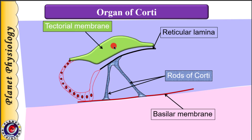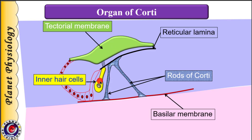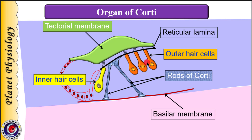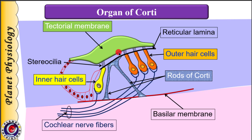Rods of Corti are placed on the basilar membrane and support the reticular lamina. Over the reticular lamina is a viscous gelatinous mass called the tectorial membrane. On the medial aspect of the rods of Corti is a single row of inner hair cells, supported by phalangeal cells. Lateral to the rods of Corti are 3 to 4 rows of outer hair cells, supported by Deiters cells, also called outer phalangeal cells. Upper ends — the necks of all hair cells — are tightly fixed into the reticular lamina. Apical ends of the hair cells project numerous minute hairs called stereocilia. Stereocilia pierce through the reticular lamina into the endolymph of scala media, and tips of the longest stereocilia are in contact with the tectorial membrane. The bases of hair cells show synaptic connections with cochlear nerve fibers.